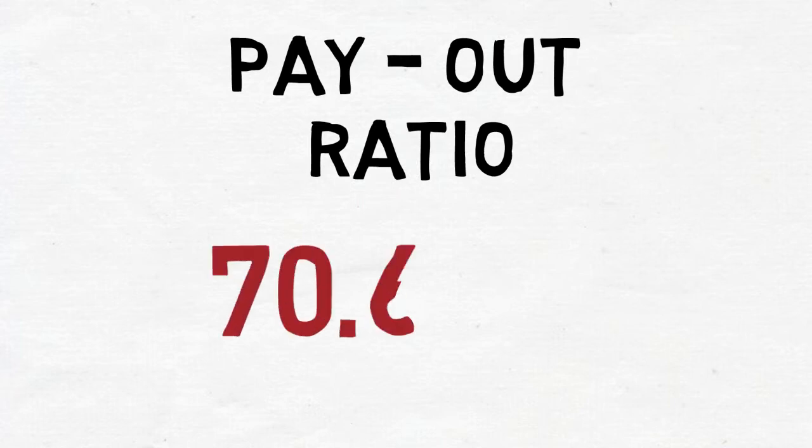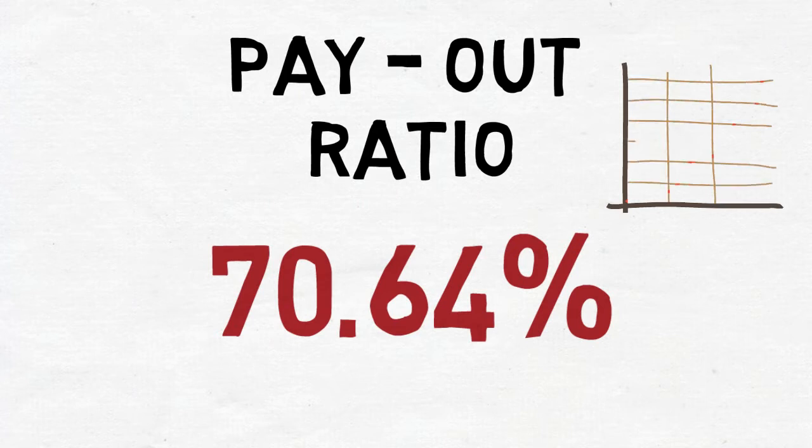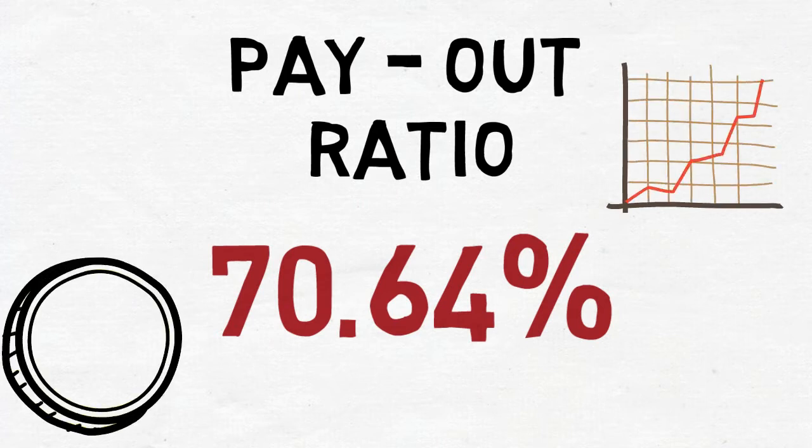BT's payout ratio is 70.64%. That means it fits under the dividend experiment rules, literally just under. Just like we saw with IBM last month, this also means that if profits don't improve over the next few quarters, it's going to be difficult to increase the dividend payments.